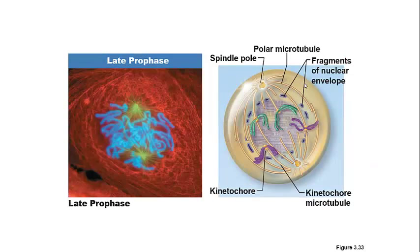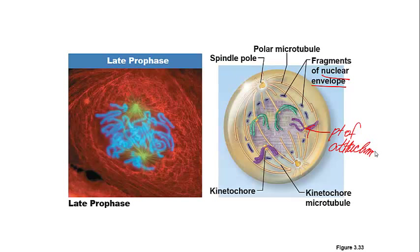During late prophase, we see the final disappearance of the nuclear envelope, with very little left over. We also see the organization of kinetochores, which are located at each of the centromeres and serve as the point of attachment for the chromosomes. Since these chromosomes need to be pulled apart to each pole, it's important that they are organized along the microtubule apparatus. The spindle is completely formed by late prophase.